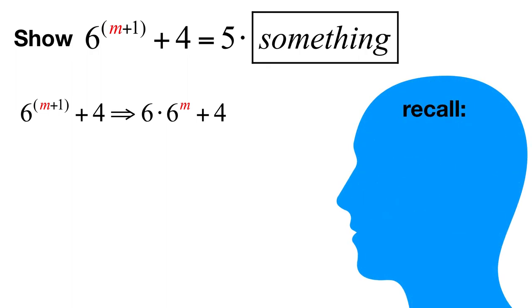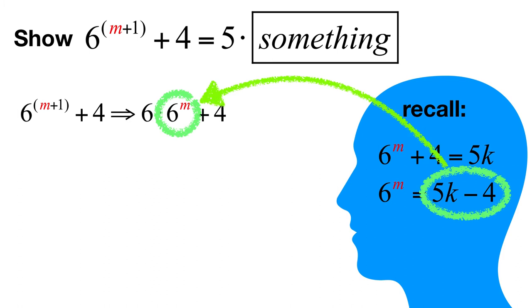It's important to recall that domino M told us that six to the M plus four equals five K. Thus, six to the M equals five K minus four. And we can use that knowledge to substitute for six to the M.